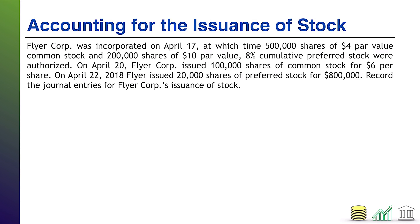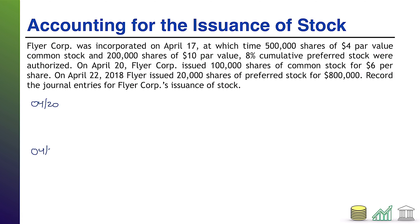Welcome back. There are only two dates to worry about here. Remember, the first date — April 17th — was the incorporation date of FlyerCore, when the 500,000 shares and 200,000 shares were authorized. But authorized stock is not economic activity; that's just a decision. It's not until issuance that you have economic activity. So our first journal entry occurs on April 20th, and our second on April 22nd.